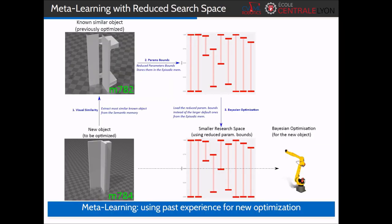The robot will then be able to use its past experience in order to perform more efficient Bayesian optimization by reducing the initial search space when considering a new object to grasp, based on the analysis of the distribution of the parameter's values for the previous optimization of a similar object. In this example, the robot has to optimize the grasping of a new object called M784. Initially, it will query its semantic memory in order to extract the most similar known object previously optimized, that is, M782. The robot will then use the analysis of the parameter's distribution of M782, stored in the episodic memory, to create a new reduced search space with more constrained boundaries, saved into the procedural memory. Finally, this smaller search space will be applied to the new Bayesian optimization of the M784 object grasping task.